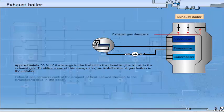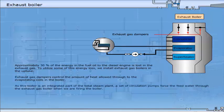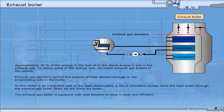Exhaust gas dampers control the amount of heat allowed through to the evaporating coils in the boiler. As this boiler is an integrated part of the total steam plant, a set of circulation pumps force the feed water through the exhaust gas boiler when we are firing the boiler. The exhaust gas boiler is equipped with soot blowers to keep it clean and efficient.